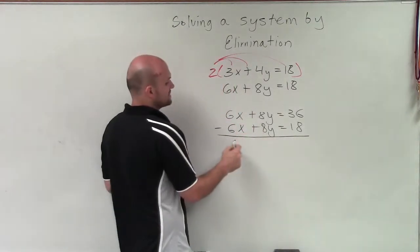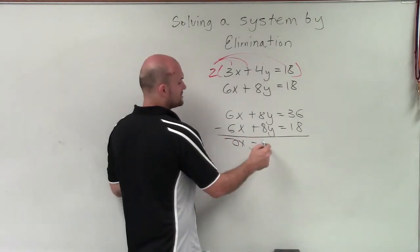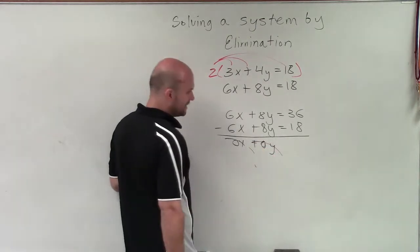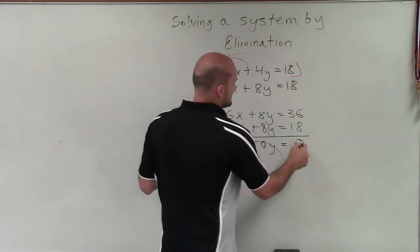So 6x minus 6x is 0x, I've eliminated the x. 8y minus 8y is 0y, I've eliminated the y. And 36 minus 18 is 18.